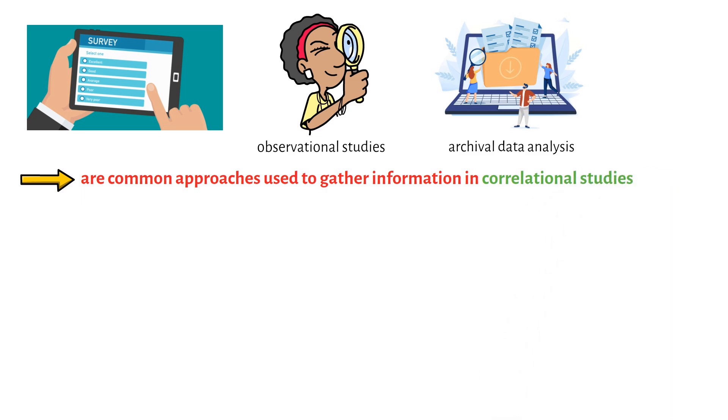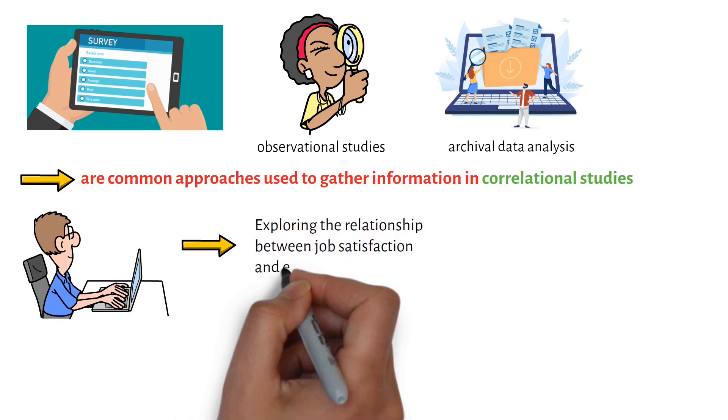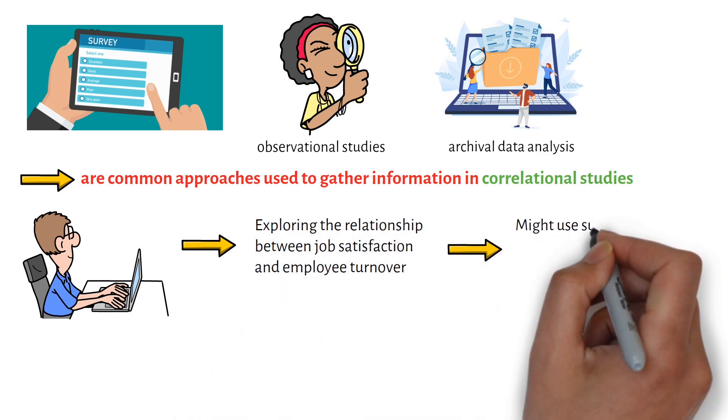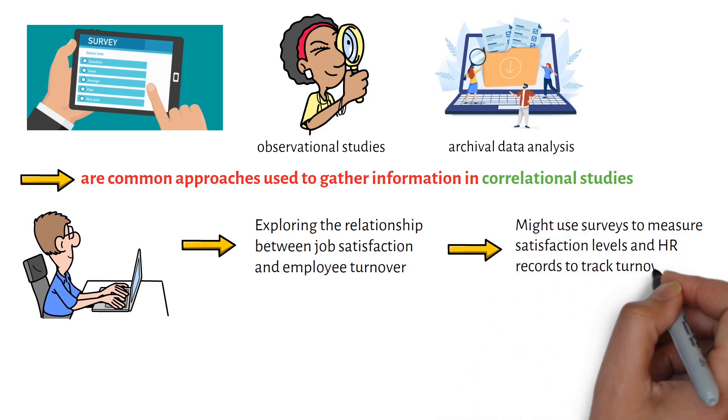For instance, a researcher exploring the relationship between job satisfaction and employee turnover might use surveys to measure satisfaction levels and HR records to track turnover rates.